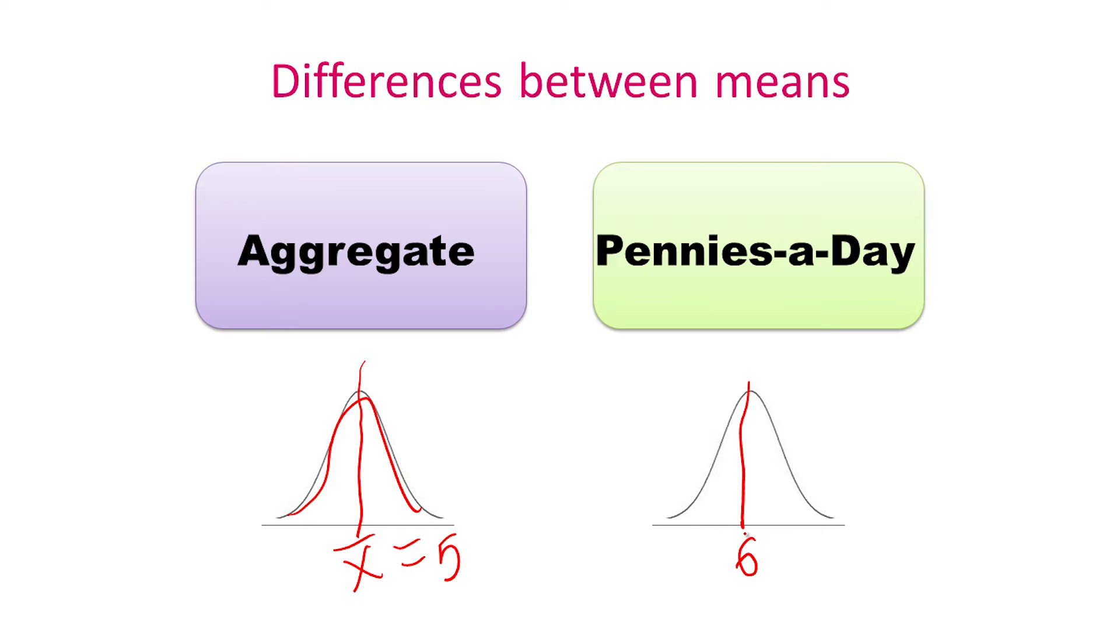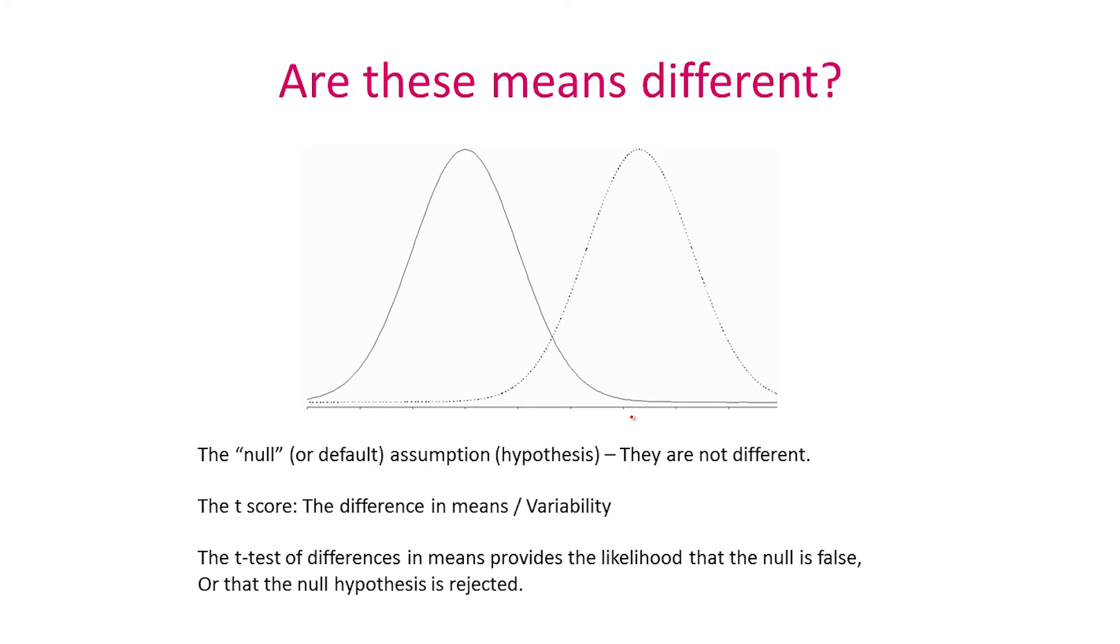However, statistically, you will notice that there is a distribution around both the average of 5 and the average of 6. And so let's imagine we had a response such as 5.5. It is possible that this number can be drawn either from the aggregate distribution or from the pennies a day distribution. So are these two means genuinely different?